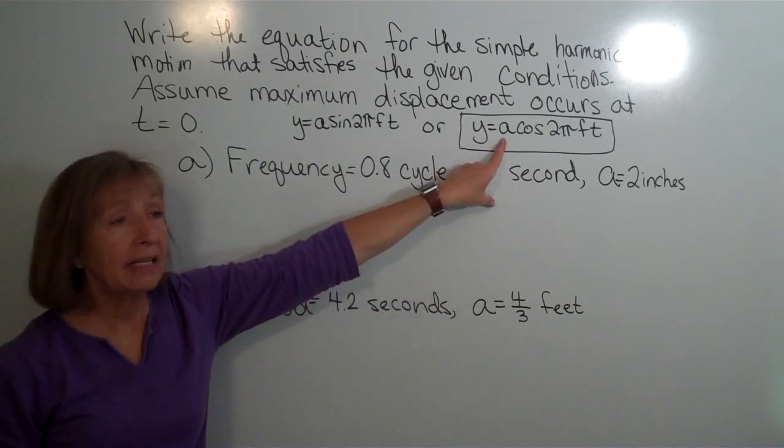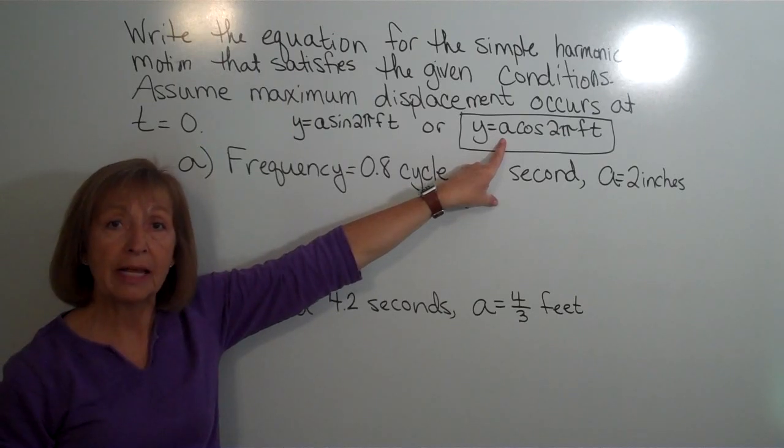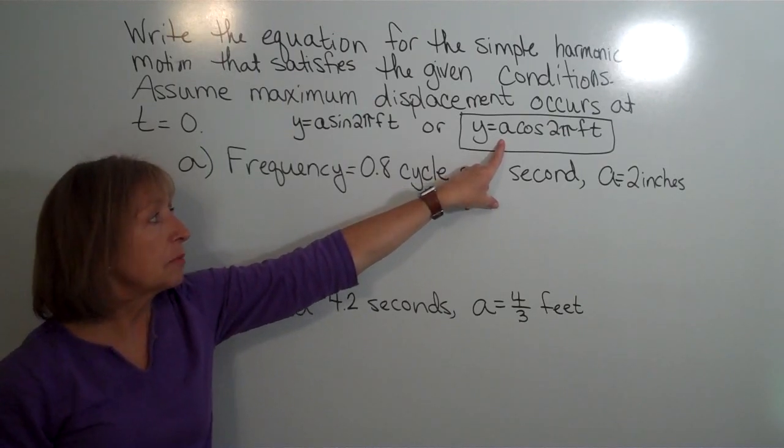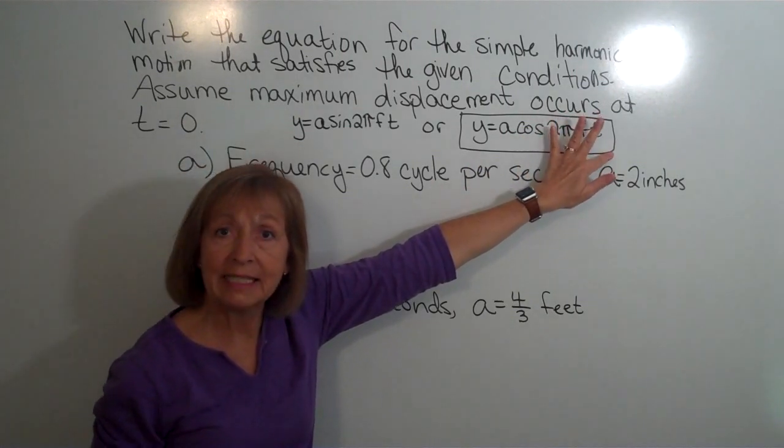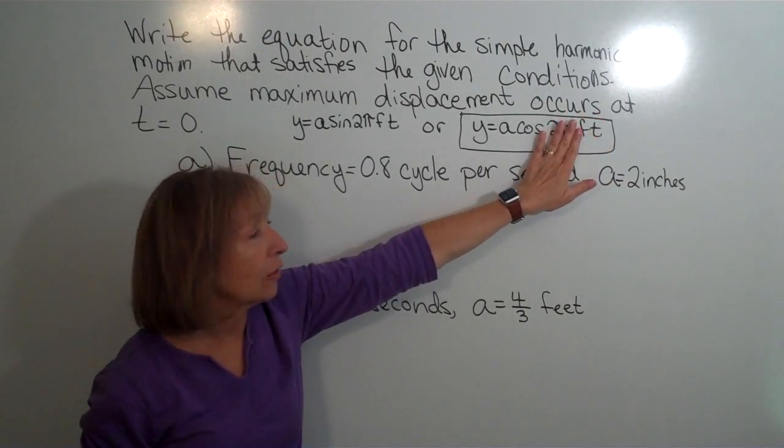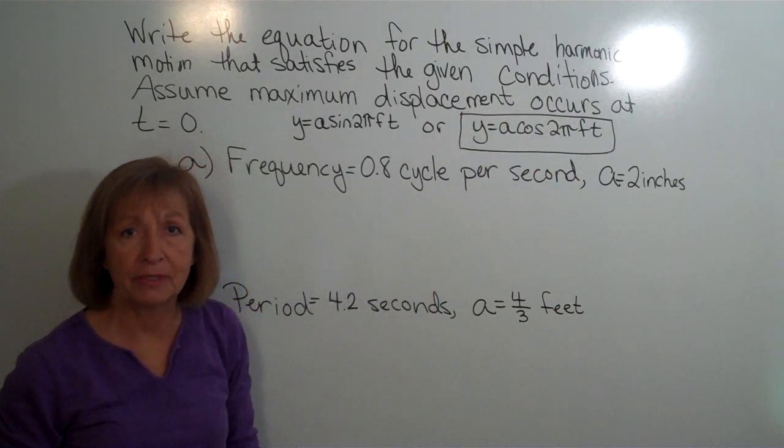Now recall that a, the number that's multiplied in front of the cosine function, is your amplitude, that maximum displacement. And it's the cosine of a coefficient in front of the t time in seconds, and that coefficient in front of t is 2π times f, the frequency.